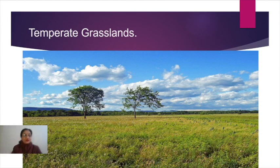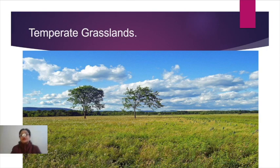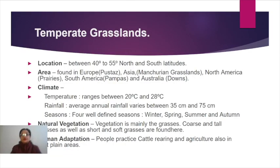Temperate grasslands occupy mainly the interior parts of the continents, in the mid-latitudinal zone lying between 40 to 55 degrees north and 40 to 55 degrees south latitudes. They are mostly found in the interior parts of the continents.